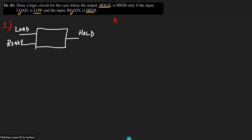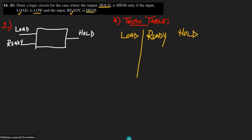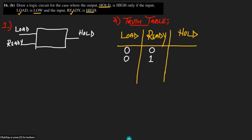In step number two, we have to draw the truth table. In the truth table we have two inputs, load and ready, and the output is hold. We have to write all the combinations that load and ready could have.